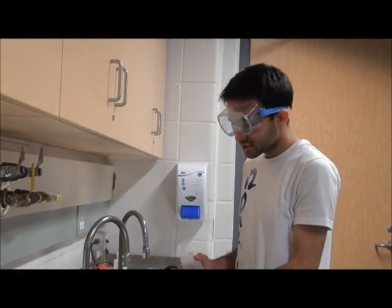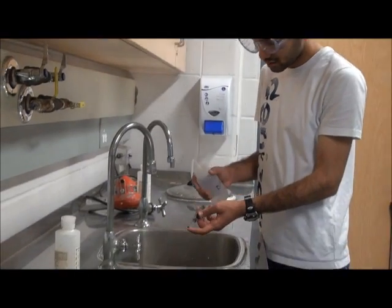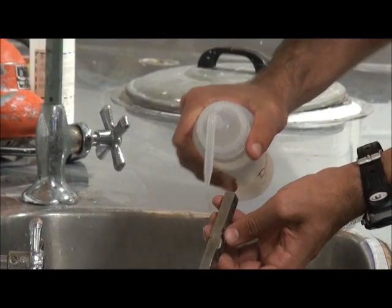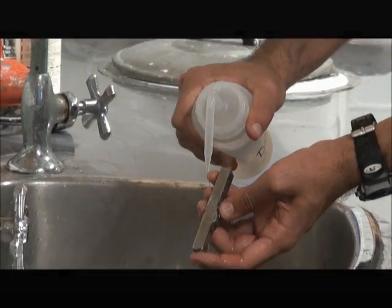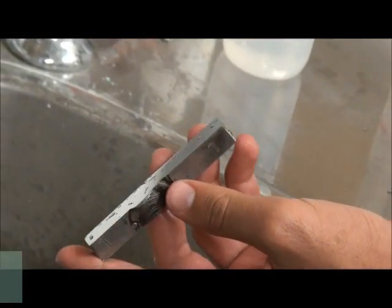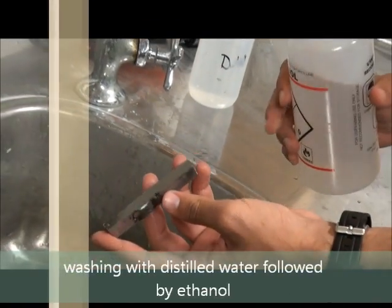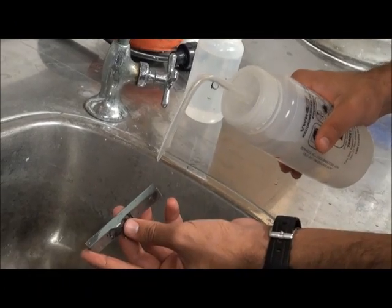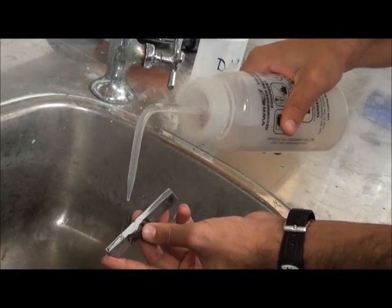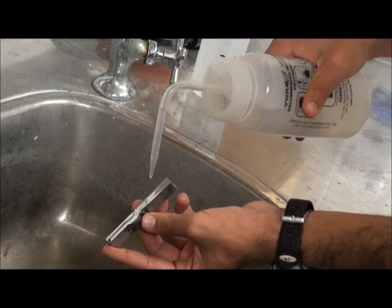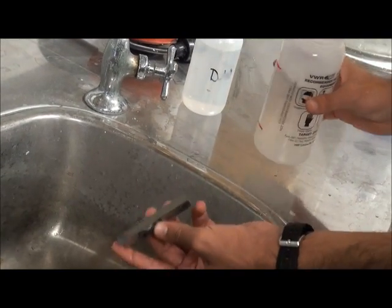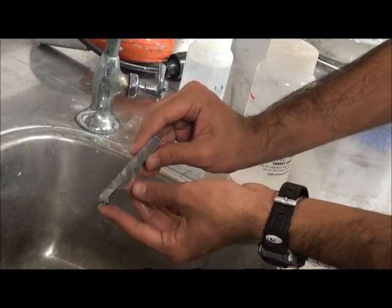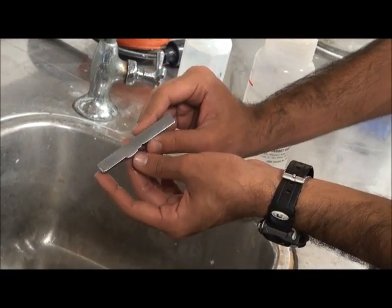After polishing, I am going to wash the sample with distilled water. We have to use the ethanol to remove the excess water on it. As you can see, the surface of the sample has become as clear as a mirror.